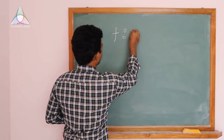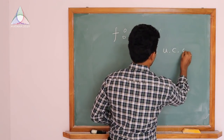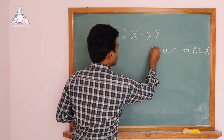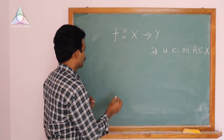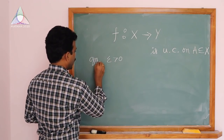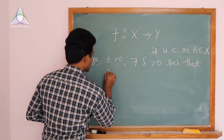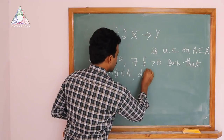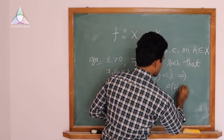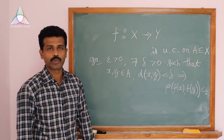So f is a function from a metric space X to a metric space Y. This function is uniformly continuous on a subset A of X. As this property is a global property, for any epsilon greater than 0, we can find a delta greater than 0 such that for x, y in A with distance between x and y less than delta, we have rho of f(x) and f(y) less than epsilon. This is the definition of uniform continuity on A.